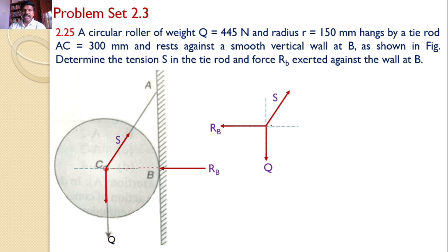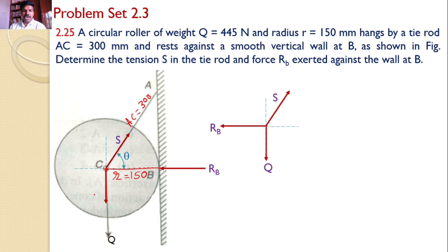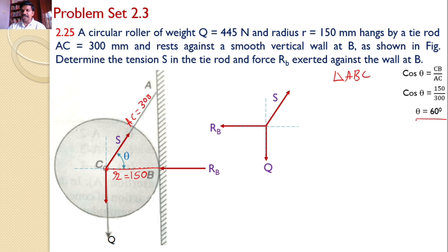The next interesting point is the angle made by S with either the X axis or Y axis. Let theta be the angle made by the string AC with the horizontal. From the triangle, AC length is given — AC is equal to 300 mm and CB is nothing but the radius, which is 150 mm. So from the right angle triangle ABC, I can write cos theta equals adjacent side divided by hypotenuse, that is CB by AC. That is cos theta equals 150 by 300, so theta equals 60 degrees.